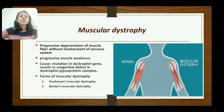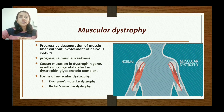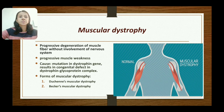The next disorder is muscular dystrophy. Here there is progressive degeneration of the muscle fiber without involvement of the nervous system. It is a syndrome characterized by progressive muscle weakness due to mutation in the dystrophin gene, resulting in a congenital defect in the dystrophin glycoprotein complex. There are two forms: Duchenne muscular dystrophy and Becker's muscular dystrophy.